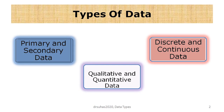Quantitative data is also called numerical data, or data expressed in terms of numbers. Numerical data is further classified into discrete data and continuous data. When data is expressed in whole numbers which are countable and do not take any fractions or decimals, they are called discrete data. When numbers can have infinite possibilities and can take decimals or fractions, they are called continuous data.